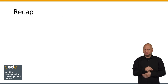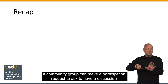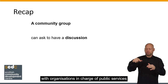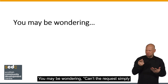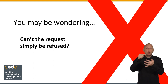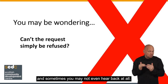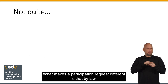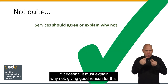And here's how. If we go back to the basics of what a participation request is, and ignore the technical terms for now, a community group can make a participation request to ask to have a discussion with organisations in charge of public services about how to improve these services. You may be wondering: can't the request simply be refused? When you normally request to participate or take part in something, the person or organisation you are asking can just say no, and sometimes you may not even hear back at all. In this case, it doesn't quite work like that. What makes a participation request different is that, by law, the public service authority should agree to your request, and if it doesn't, it must explain why not, giving good reason for this.